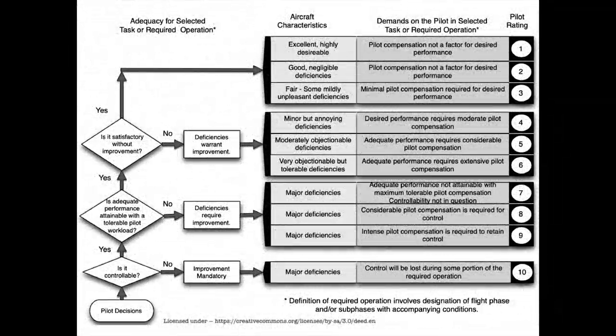The Cooper-Harper Scale is a rating scale and set of criteria used by test pilots and flight test engineers to evaluate the handling qualities of aircraft while performing a task during a flight test. Before explaining the details, we need to know the steps to apply this rating scale to evaluate the handling qualities.